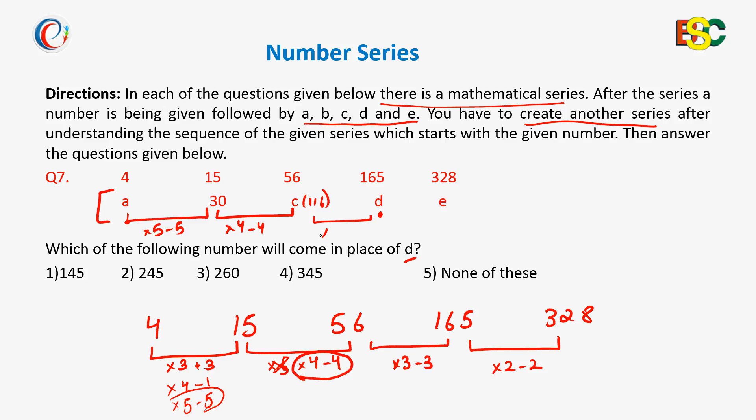Then into 3 minus 3, 116 into 3 is 348 and 348 minus 3 is 345. And thus this is our answer which is present in option number 4. Thank you.